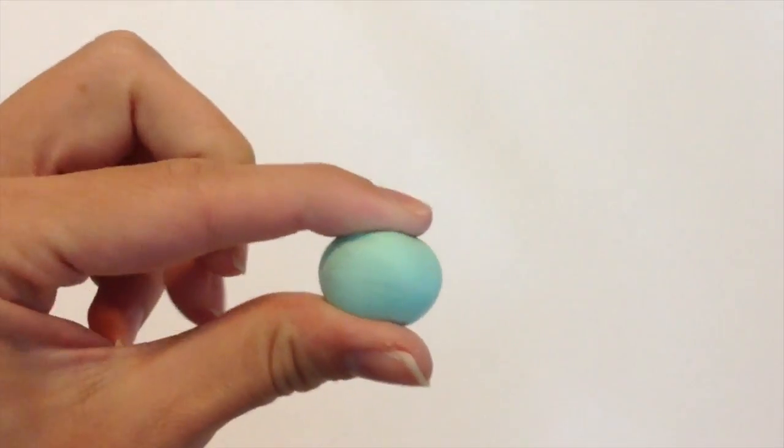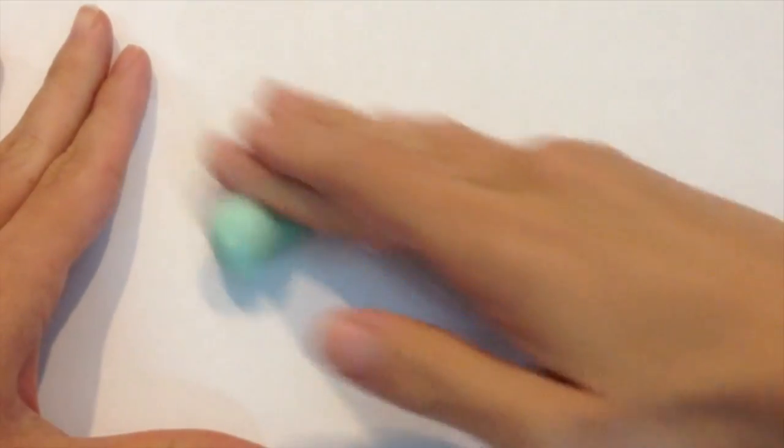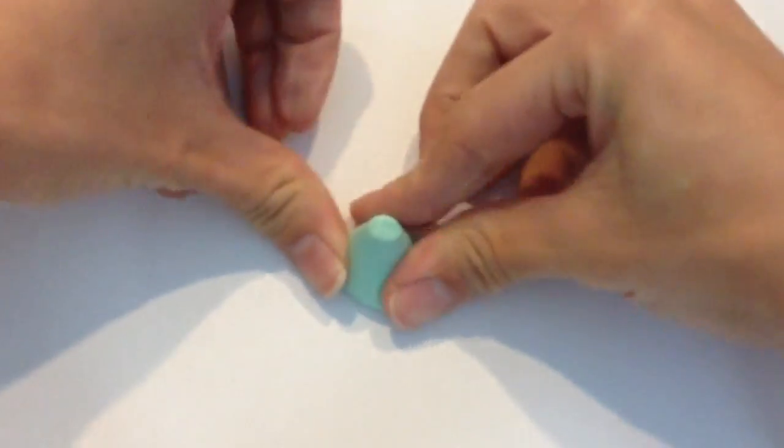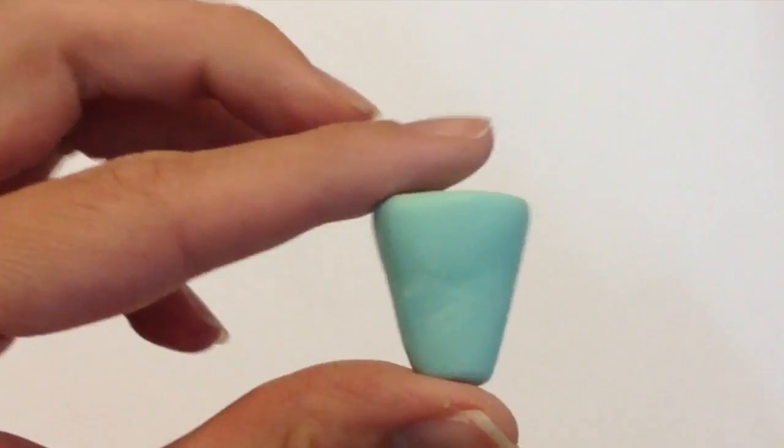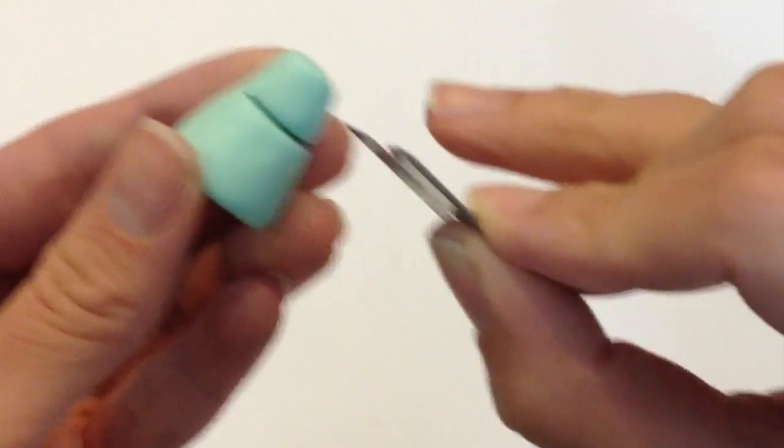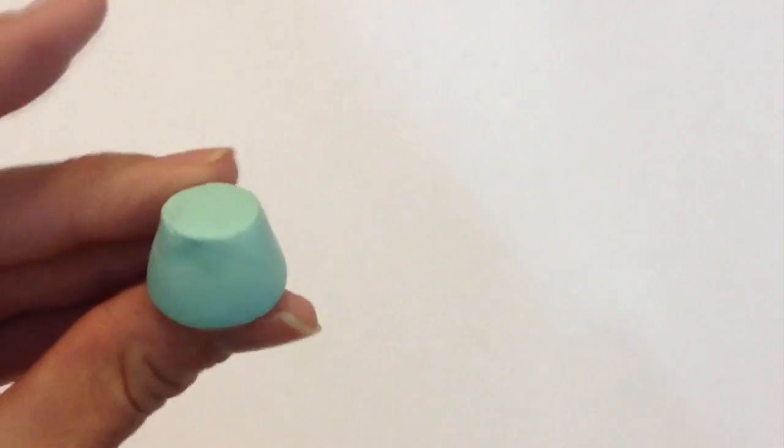You're going to start off with a mint green piece of clay and roll this into the shape of a cup. All I'm doing is rolling one side so it looks like a cone, and you want to make sure that all the edges are really flat on the bottom. Once you're happy with the shape of the cone, take a blade and remove the excess clay on the bottom so that your cup is a little more short.